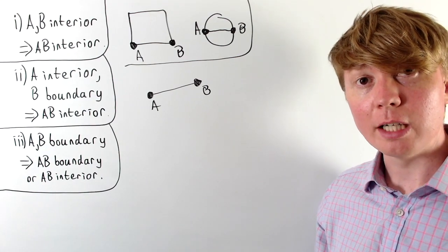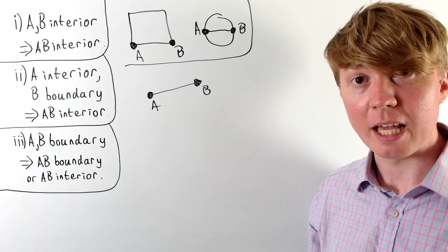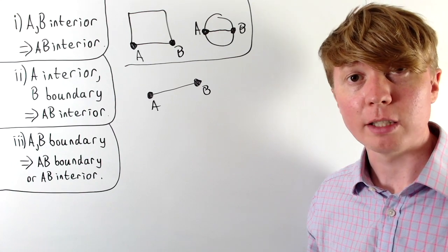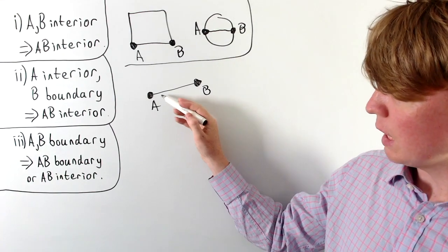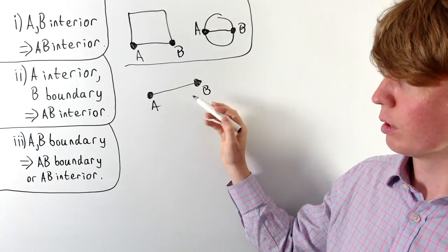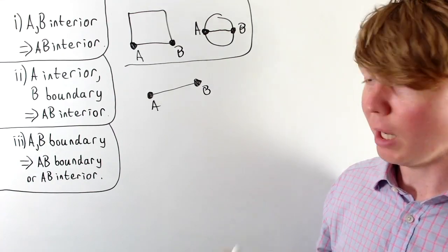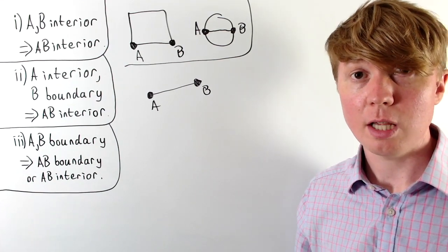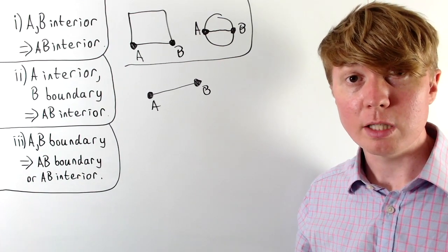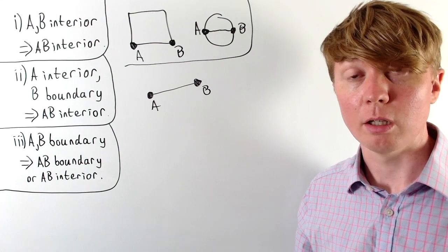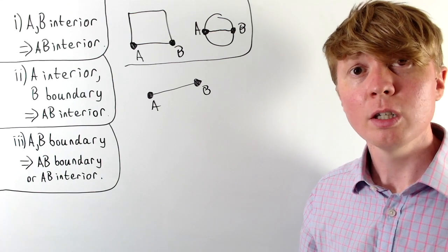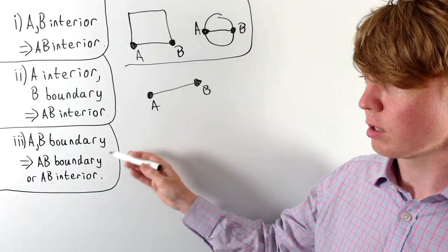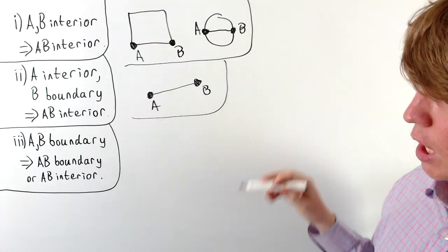If there are no interior points on the line segment, all points must be boundary points in order to belong to the set. So in this case — no interior points on our line segment — they're all boundary points and the result is satisfied.